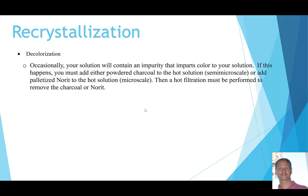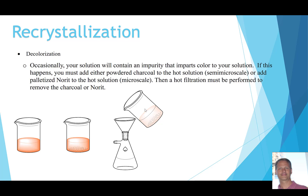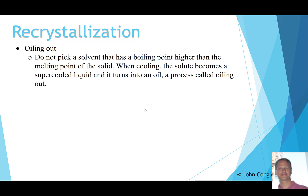Sometimes decolorization is needed — if you know your solid is a white powder but your solution appears orange, add a little activated charcoal, powder charcoal, or pelletized Norit. This pulls color-imparting compounds out of solution, leaving a slurry that requires hot filtration into a filtering flask to remove the charcoal, leaving you with a purified, colorless solution. Also watch out for oiling out: pick a solvent with a boiling point higher than the melting point of your solid, otherwise the solid can melt and form an oily layer.